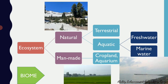Ecosystems can be natural or manmade. Natural ecosystems are those present in nature which have not been made by man — they are not synthetic at all. Manmade ecosystems are artificial ecosystems that have arisen due to human activities. So we have both natural and manmade ecosystems.